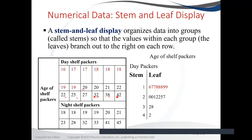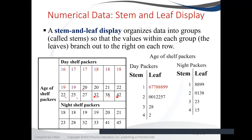For the 40s, we only have 4 as our stem and the leaf is 2, and we plot it like that. We can also plot for the night packers — it follows the same structure: we have 1 as our stem, 2 as our stem, 3 as our stem, and 4 as our stem, and all the leaves follow each stem. And that is our stem-and-leaf plot.